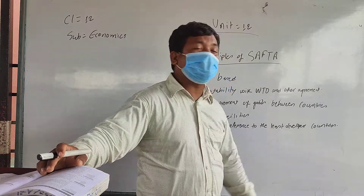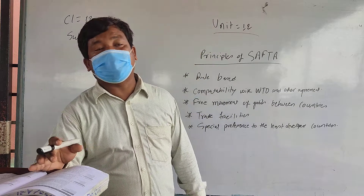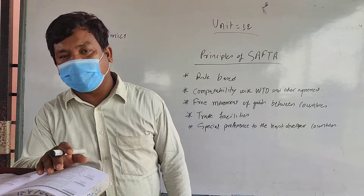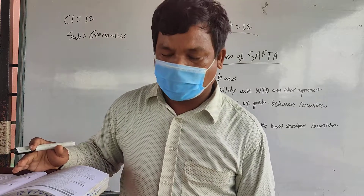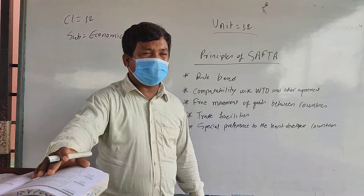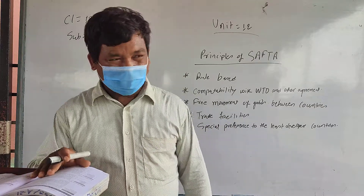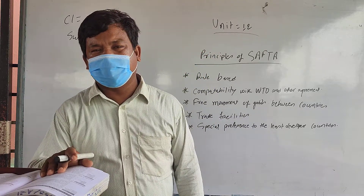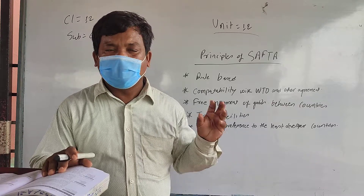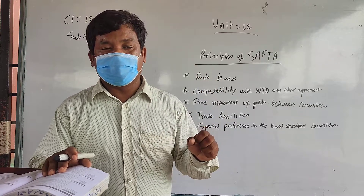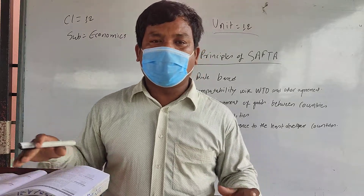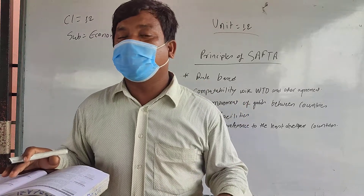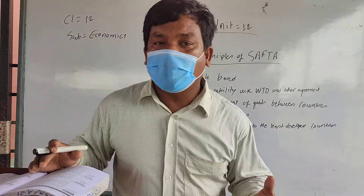Number five is special preference to the least developed countries. SAFTA is also established to facilitate those countries which are least developed. Within SAARC nations, there are some countries which are very poor and under least developed status — for example, Afghanistan, Maldives, and Nepal also. They come from the least developed countries category. So the economy of those least developed countries should also be improved. To develop the economy of those countries, SAFTA has been established to give special preference to least developed countries, so they can become economically sound.